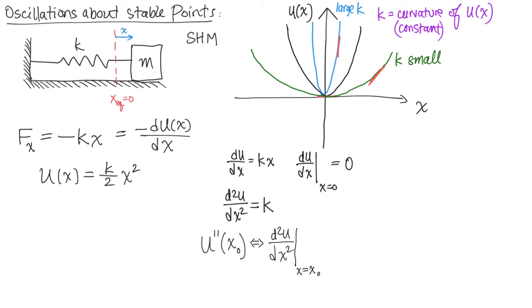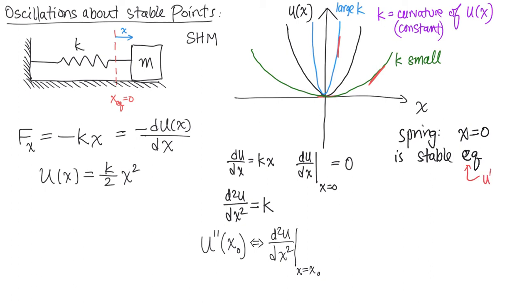Using this notation for a spring, at the equilibrium point — which is a stable equilibrium point because the curvature is positive — we have x equals zero as a stable equilibrium. We know it's an equilibrium because U prime at x equals zero is zero, telling us there's zero slope at the origin. And we know it's stable because U double prime at the origin, which equals K, is positive.